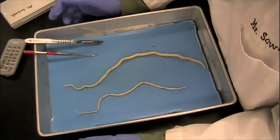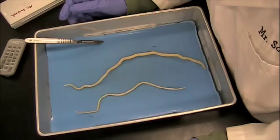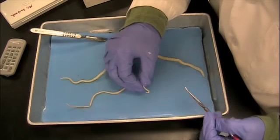You can see that this one here is much larger than this one over here. The most telling characteristic however is that the males have a hooked posterior end. This one right here you can see has a hook on the end and this is a reproductive feature.